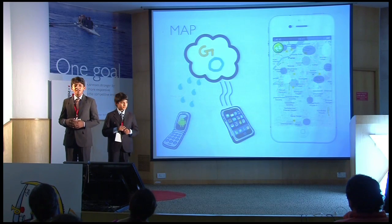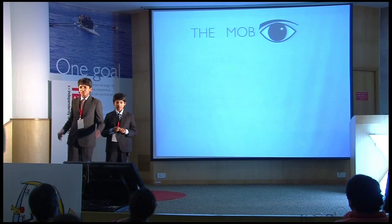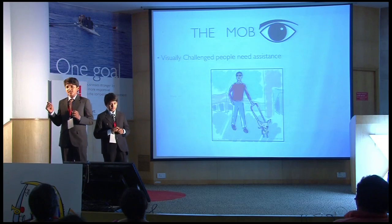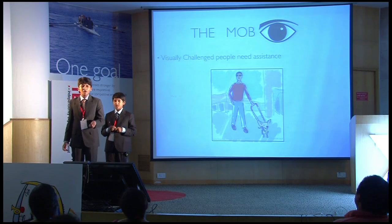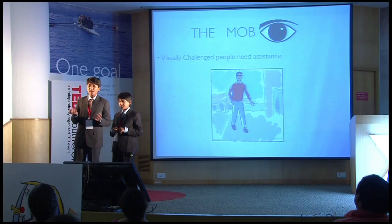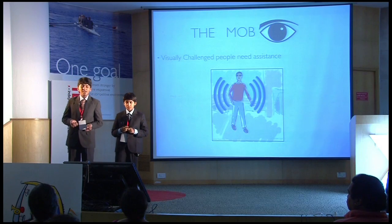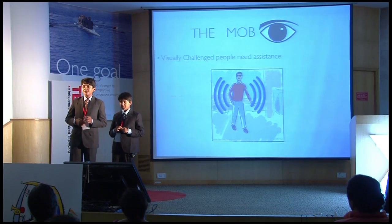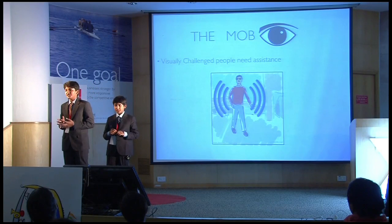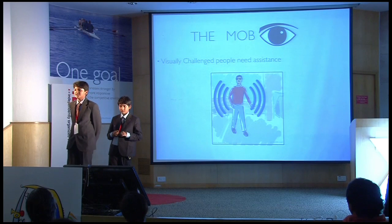We might be releasing the Go Map app around February or March. We also want to help the visually challenged. Currently they use a dog or another person's assistance to move around. Instead, they could use their smartphone, which has Bluetooth, infrared, and a camera. Using these three, we can detect obstacles and tell the person to take a right or a left. This should be coming in about six months, and we want to release it fast to help people.